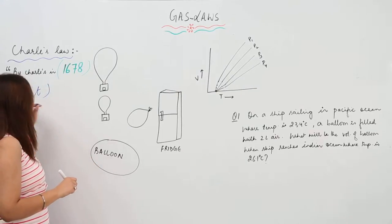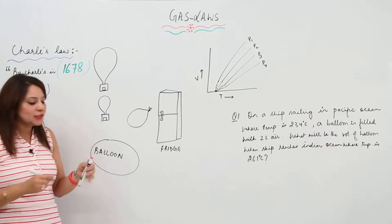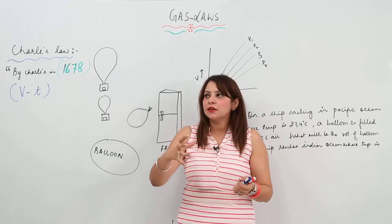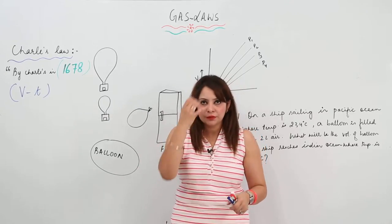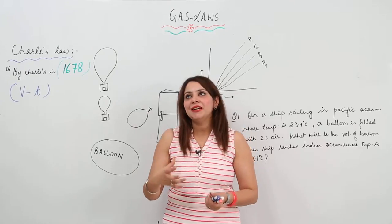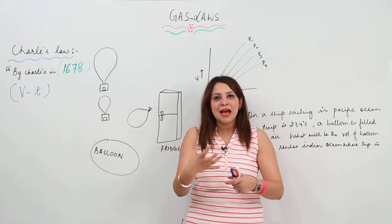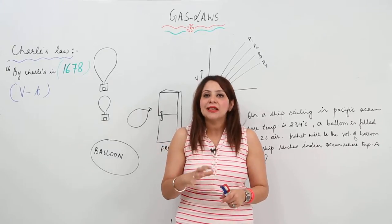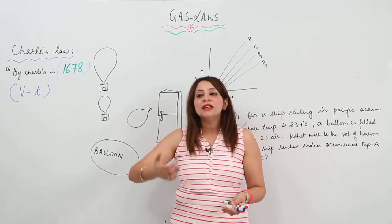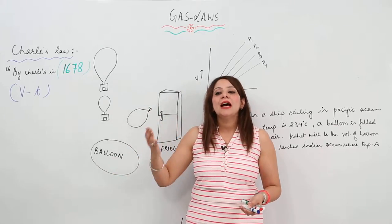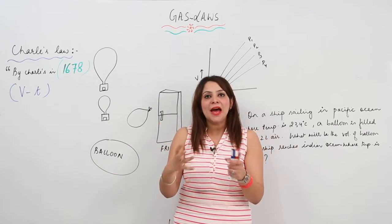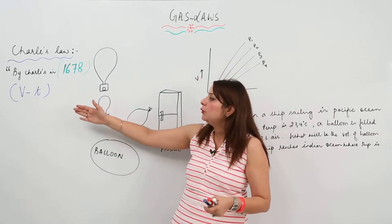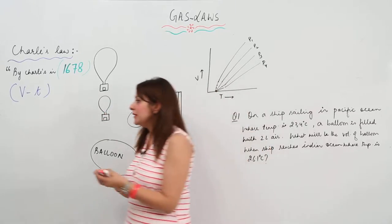This law is based on experimental observation. What we see in experiments is that when you heat a gas, the volume of the gas gets affected, and when you cool the gas, the volume gets affected again. This law explains how gases expand when we heat them or contract when we cool them — so it is a volume-temperature relationship.